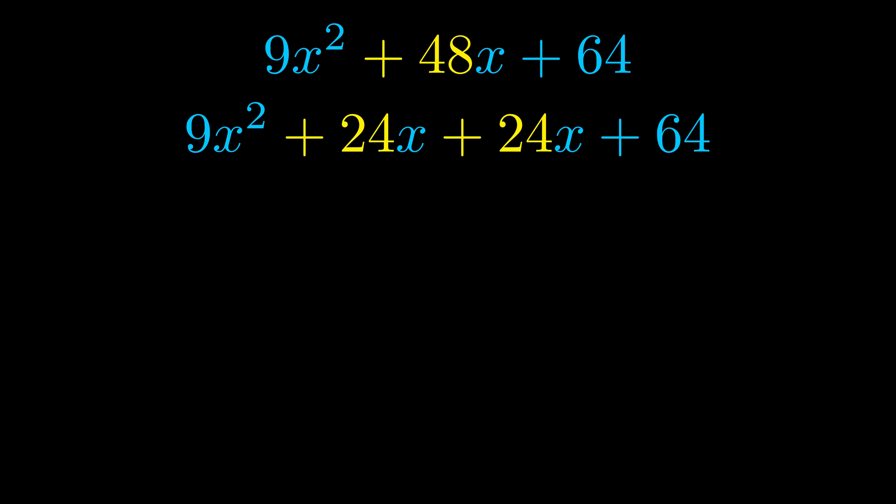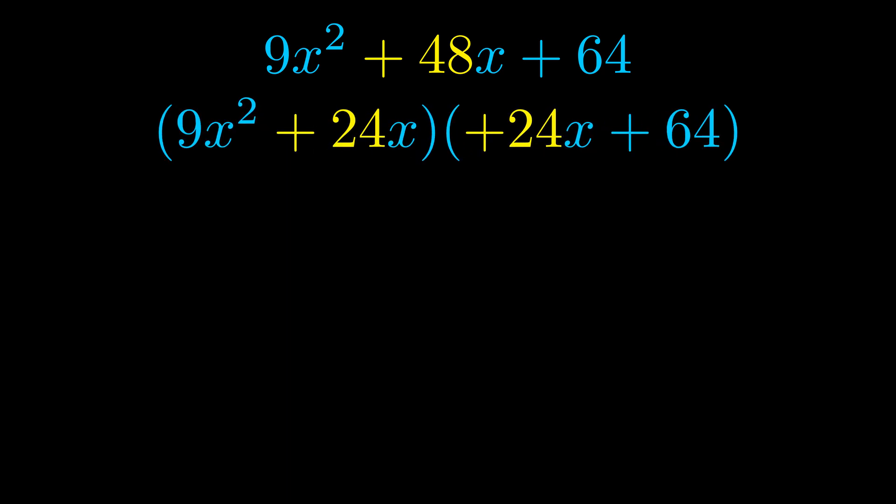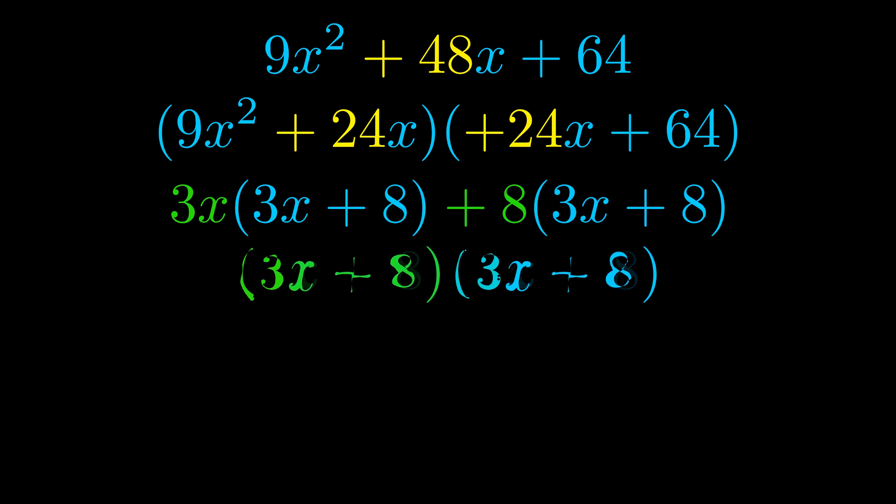Once we've done this we go ahead and we put parentheses around the first term and the last term. And we do that so that we can take the greatest common factor out of both terms. We can see the greatest common factor is now outside in green. Notice also how what remains inside of the parentheses is the same in both cases. The blue values are the same.